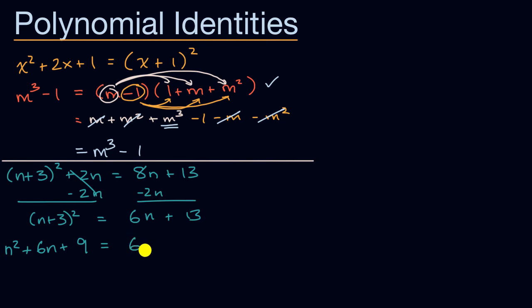And is this going to be equal to 6n plus 13? Well, already this is starting to look a little bit sketchy, but let's just keep going with the algebra. So let's see, if we subtract 6n from both sides, what do you get?